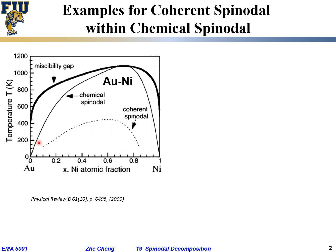The coherent spinodal represents where we actually observe spinodal decomposition in experiment. When we quench the sample from the single-phase region into this coherent spinodal region, we can really observe spinodal decomposition. Outside of this coherent spinodal, although theoretically spinodal decomposition should occur when neglecting chemical and geometric terms, in reality we do not readily observe it—and quite often the system still undergoes nucleation and growth.